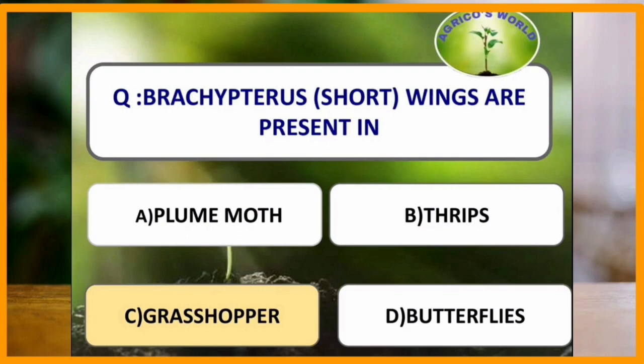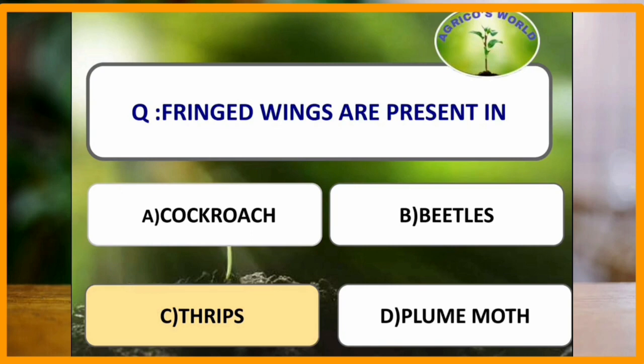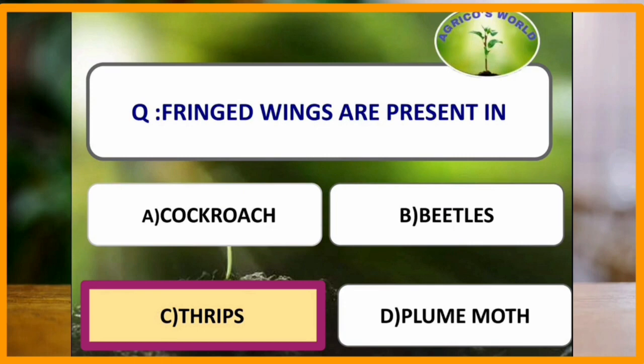Brachypterous, i.e. short wings, are present in which of the following insects? Brachypterous wings are present in grasshopper. Fringed wings are present in which of the following? Fringed wings are present in thrips. In fringed type of wings, the wings are highly reduced with reduced venation and fringed with long marginal hairs giving a feather-like appearance. Both wings of thrips are modified into fringed wings.